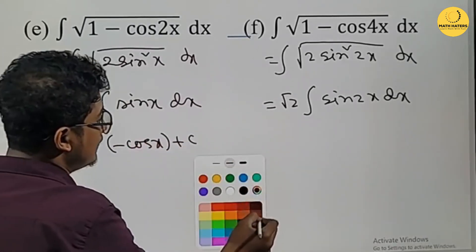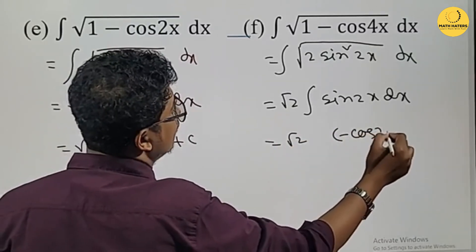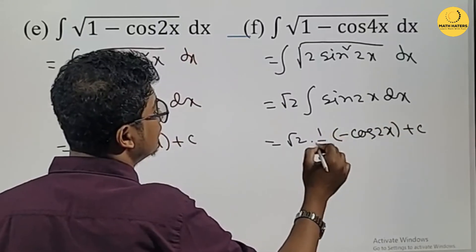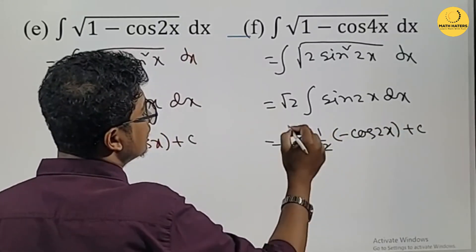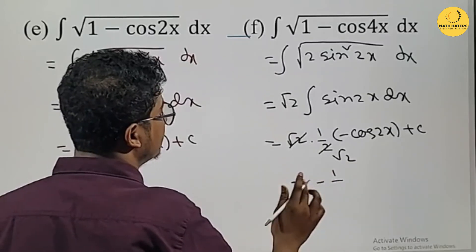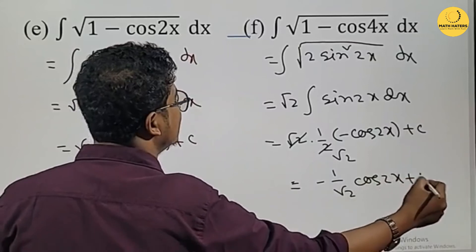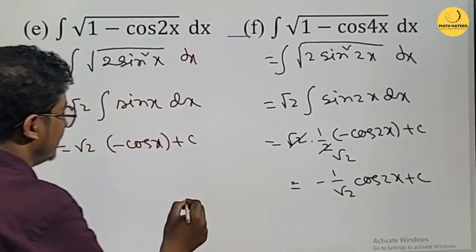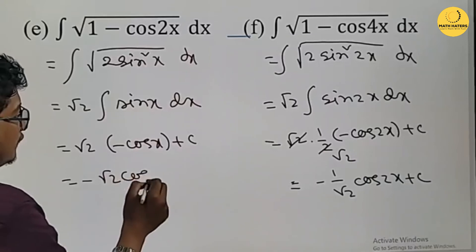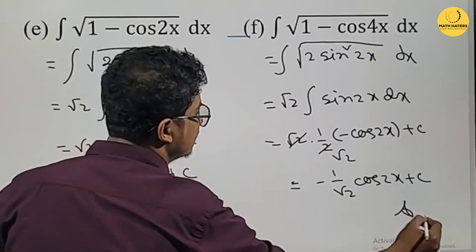Then, root 2 times integration of sin x gives minus cos x plus c. With x equals 2, we get root 2 times minus 1 over root 2 times cos 2x plus c, which simplifies to minus root 2 times cos x plus c. And that is the final answer.